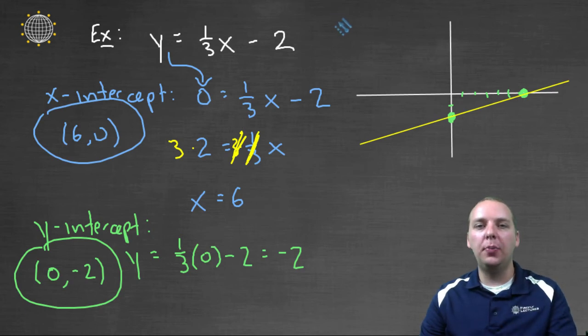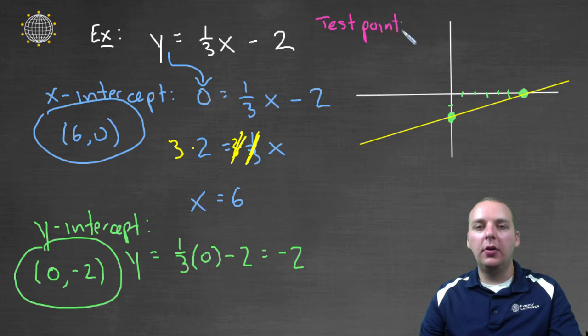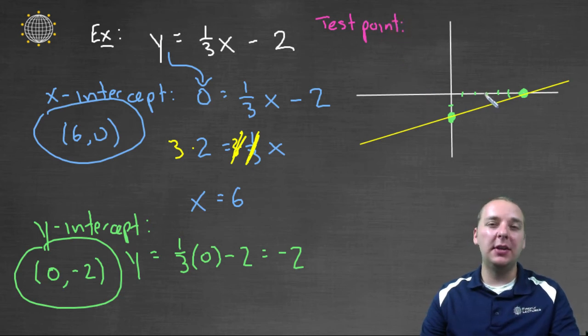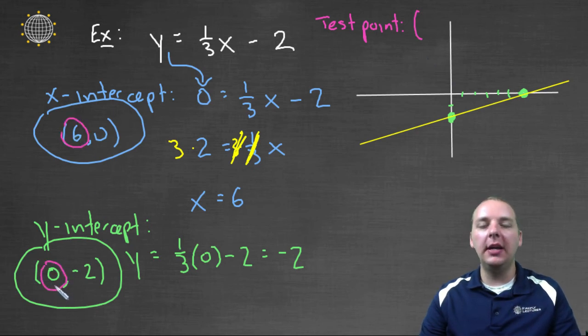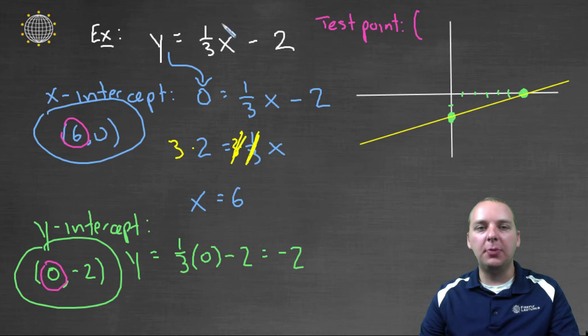Let's pick one additional point. So here's how we do a test point. I'll do this in pink. Okay, for a test point, I probably should have done this before I did the graph, but it's okay, we'll do it after the graph. We're going to choose just any x value. Just don't let it be six, and don't let it be zero. But anybody else will be fine.